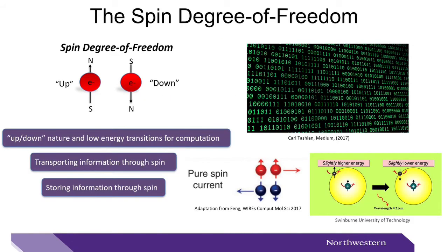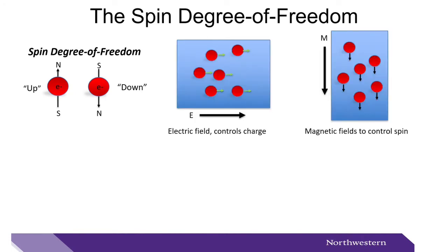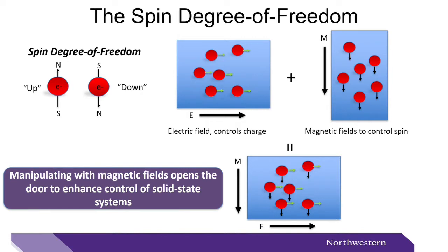The spin degree of freedom is a fundamental property of an electron. Spins have an up-down nature and little energy is needed to switch between these states, which is advantageous for computation. This ultimately makes spin appealing for transporting and storing information. To control the spin degree of freedom, we need a knob. Examples of such systems will be given later, but first let's talk briefly about what tools or methods we can actually use to manipulate the spin.